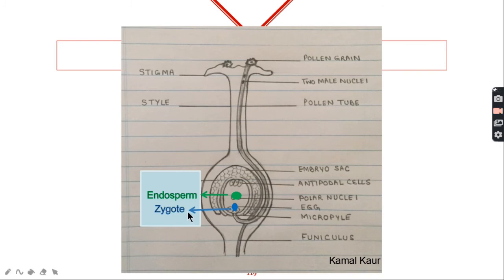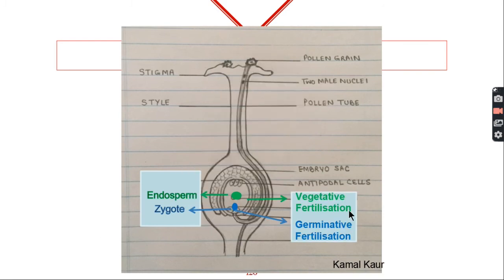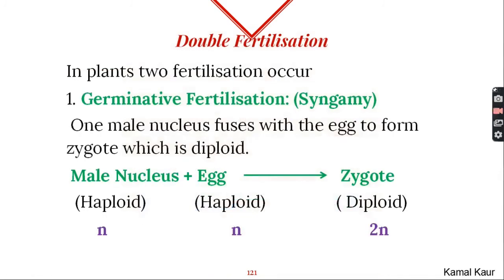The fertilization in which zygote has been formed is called germinative fertilization while where endosperm is formed it is called vegetative fertilization. So we see that in plants two fertilizations occur and we say that there is double fertilization in plants.